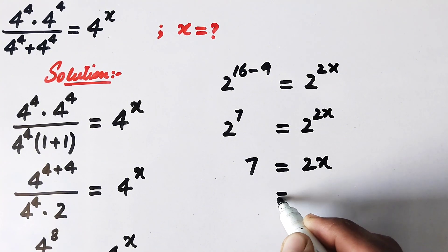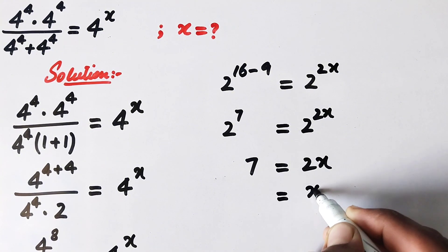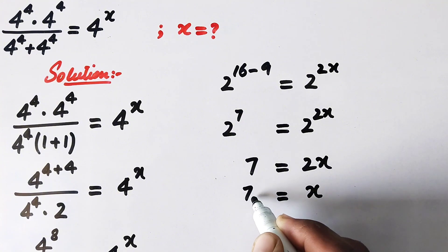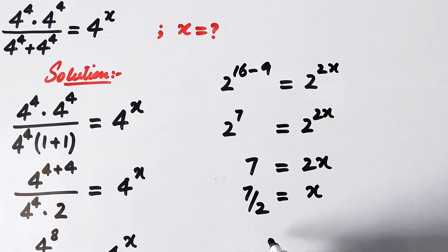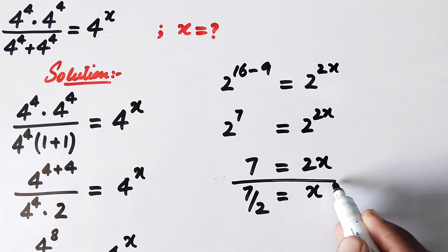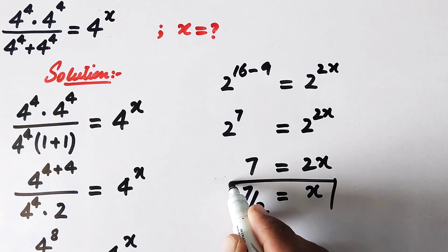We get 7 equals 2x, so x is equal to 7 over 2. That is the value of x.